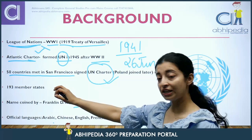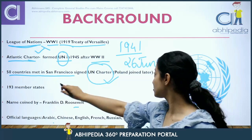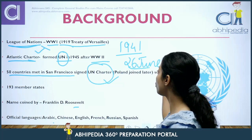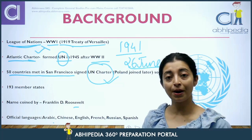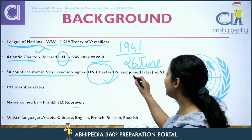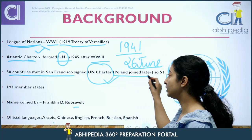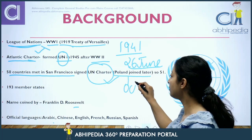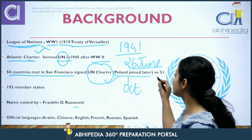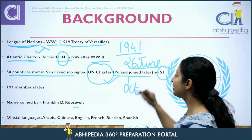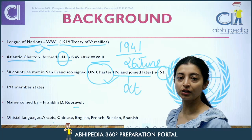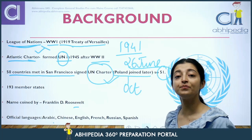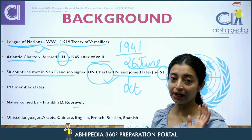The UN Charter was signed in San Francisco on 26th June. Then Poland joined in October. This is why we say that 51 nations signed the UN Charter.